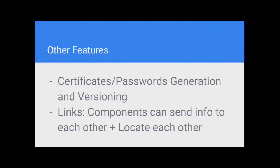Are link types like 'database' something you define yourself as the deployer, or are they inherent to BOSH? Whenever you create your release, you define any type you want. And then whenever you run that job, BOSH will satisfy it — there's another job that provides that link and gives it to the consumer.